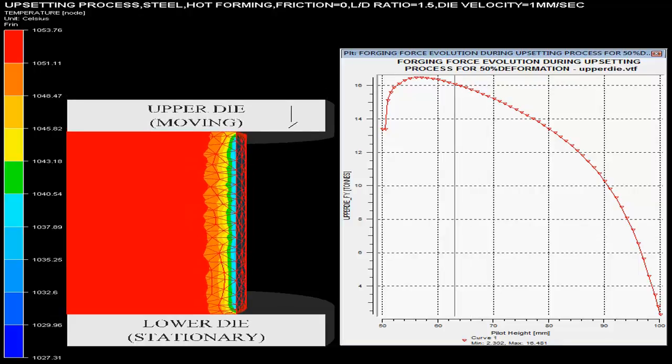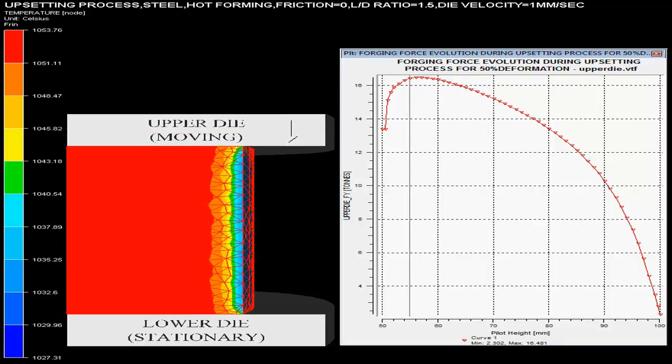The scale on the left-hand side describes the temperature in the billet changing during the process.